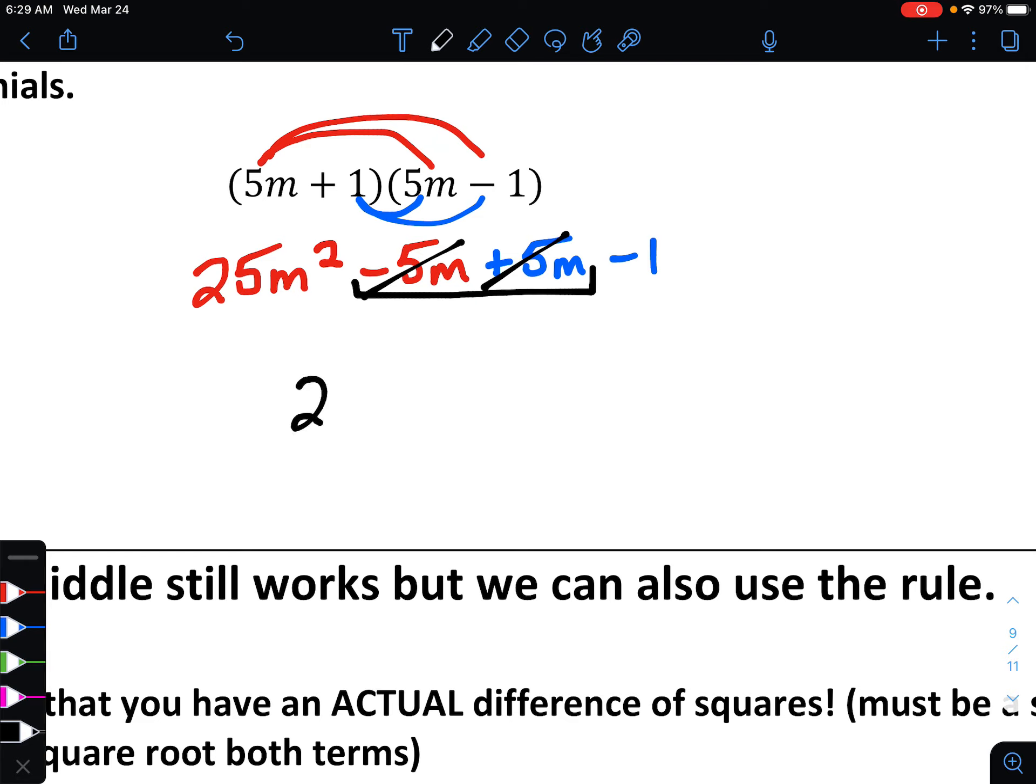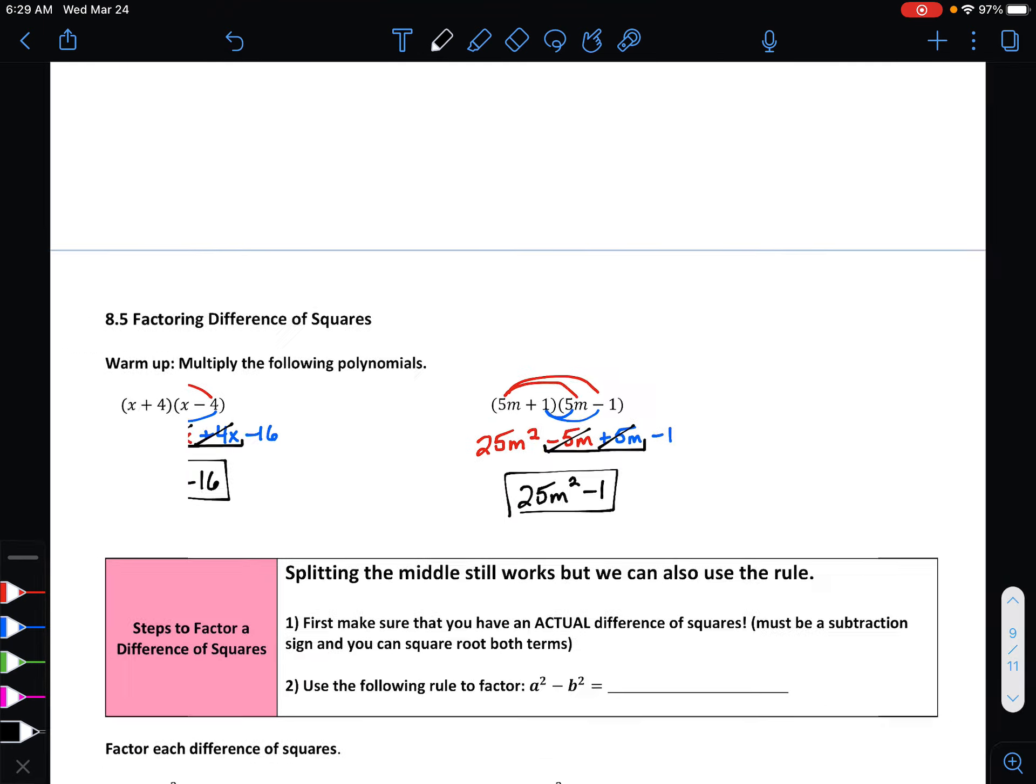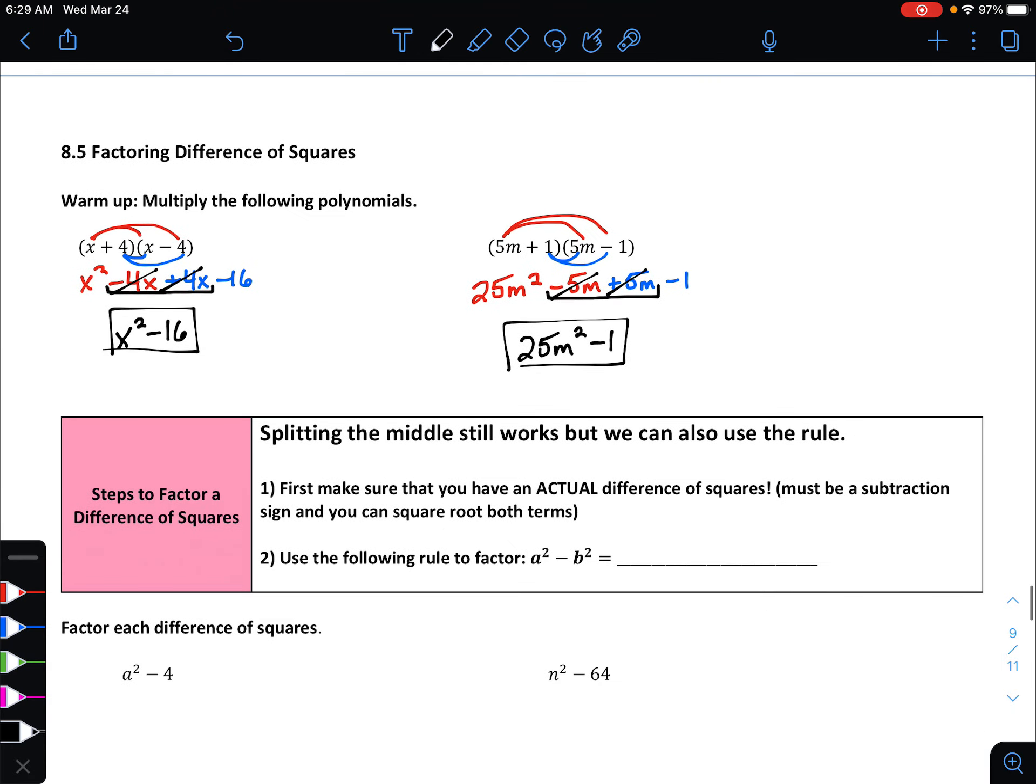Once again, if we combine like terms, the two terms in the middle are going to add to be zero. And that leaves us with 25m squared and a minus 1 for our final answer.